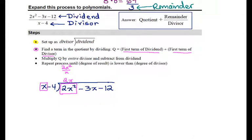My next step is to multiply that term I just found, which I'm calling q just to give it a name, by the entire divisor. So, I take the 2x that I just found, I multiply it by the divisor, x minus 4, and I write it below my dividend. So, I have to distribute.